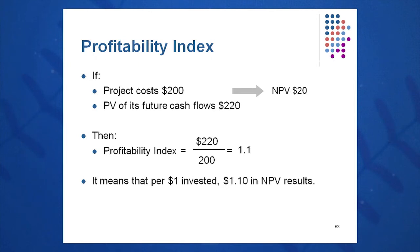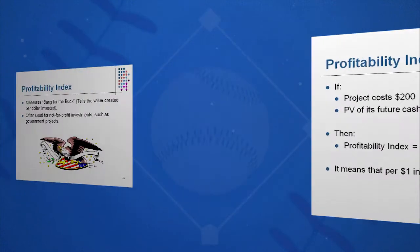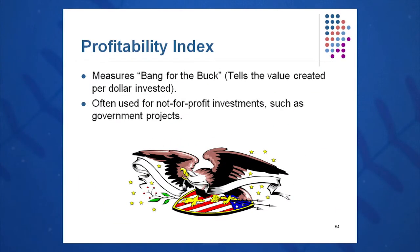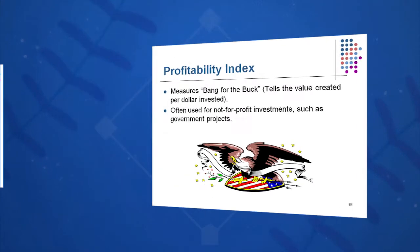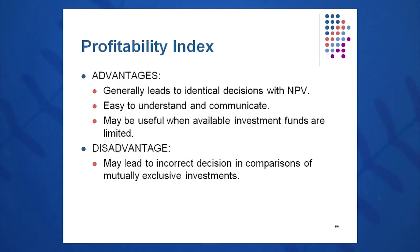So for every dollar invested, we get a positive $1.10 in NPV. We'll have a positive NPV when the profitability index is greater than 1. It measures bang for the buck, is often used in not-for-profits and government projects, is easy to understand and communicate, and should be identical in decision to NPV. So again, you're going to use this in governmental and nonprofit organizations.